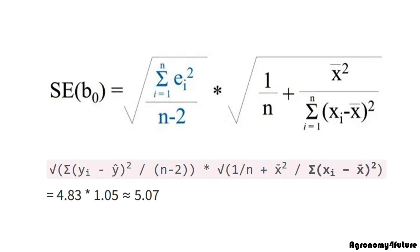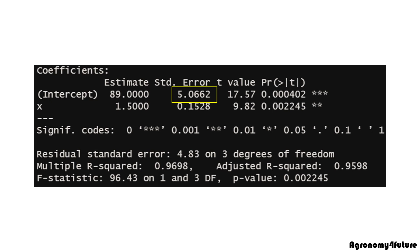Therefore, the standard error of intercept would be 5.07. Please see the table which the statistical program provided. It's the same value.